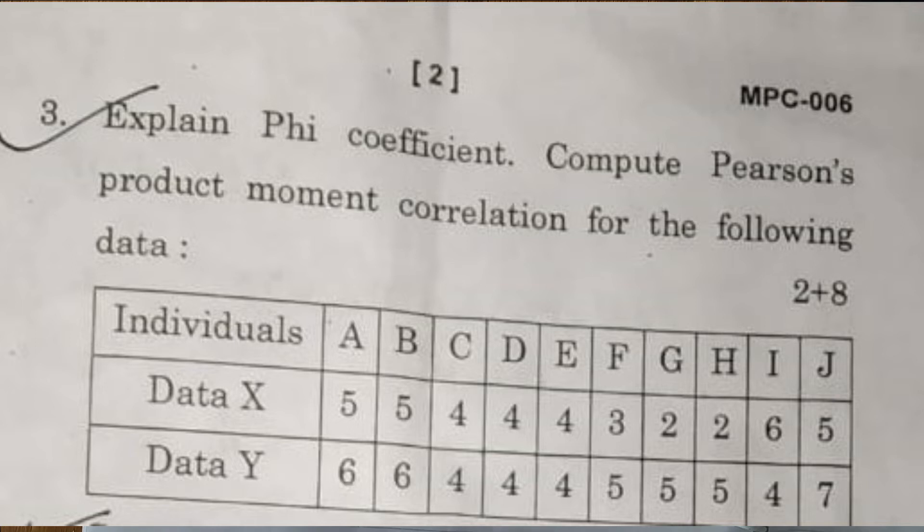Where it says, explain phi coefficients, which is the first part, and the second is compute Pearson's product moment correlation for the following data.